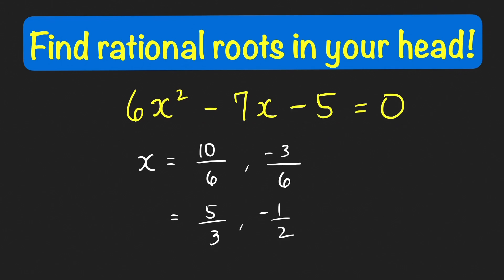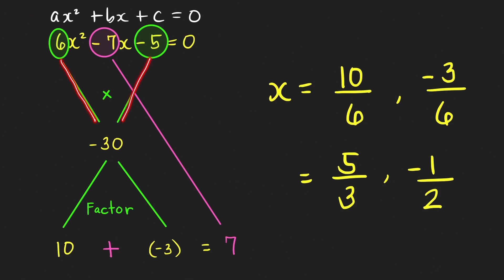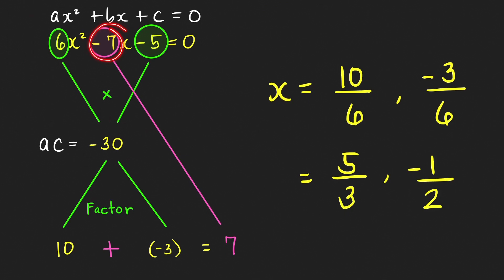Let me explain the process step by step. This quadratic equation is in the form ax squared plus bx plus c equal to 0. The first step is to multiply a and c — we take the product of 6 and negative 5 and get negative 30. Now you think of factors of negative 30 whose sum is the negative of the coefficient of x, which is equal to 7.